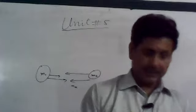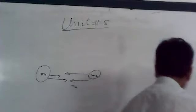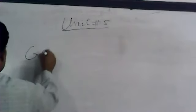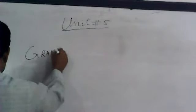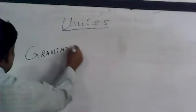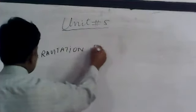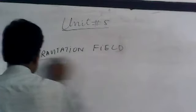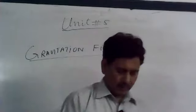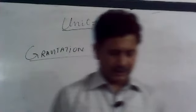What is the gravitational field? The gravitational field has a field strength. According to Newton's law of gravitation, the force between two bodies is given by F equals G M1 M2 over D squared.